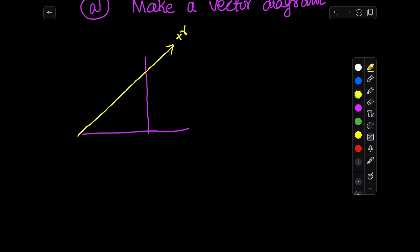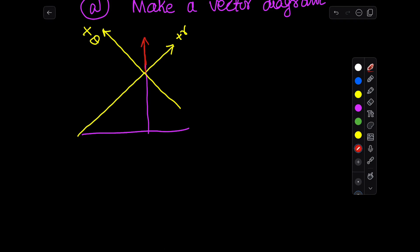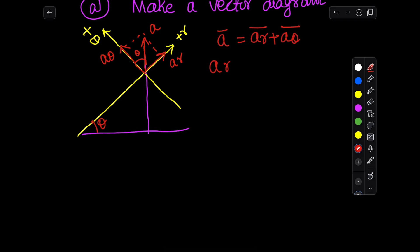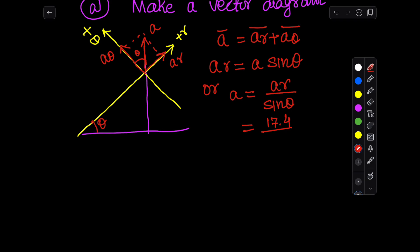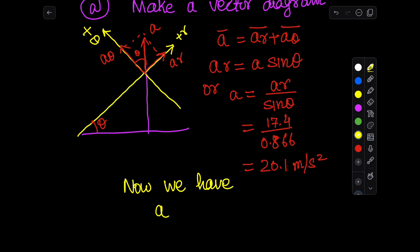We draw the acceleration vector diagram with its components in the r and theta directions. Since acceleration is in the vertical direction — as given in the problem — we draw the ar and a-theta components, both positive as the rocket moves in the positive vertical direction. Using trigonometry: ar equals a times sine theta. Since ar is already known, the total acceleration is: a equals ar divided by sine theta.